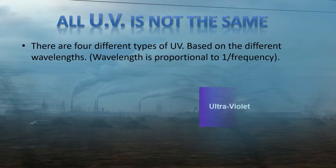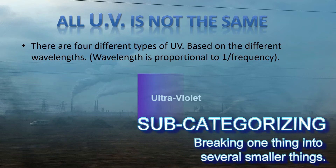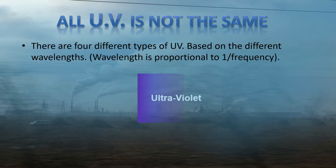But all UV light is not the same. There are four different types of UV light — we are sub-categorizing UV light. These are based on the different wavelengths or frequencies of the light wave.